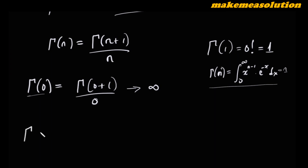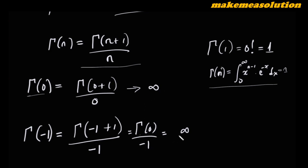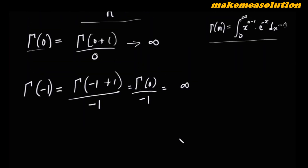Now let's evaluate gamma of minus one with the same recurrence relation. We'll have gamma of minus one plus one divided by minus one, which is gamma of zero divided by minus one. This gives infinity again. Gamma of zero is infinity; infinity divided by minus one is still infinity — or strictly minus infinity, but we'll use unsigned infinity for now.